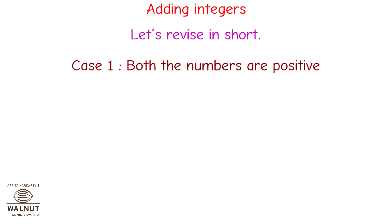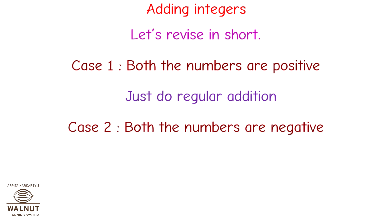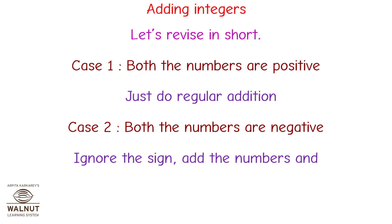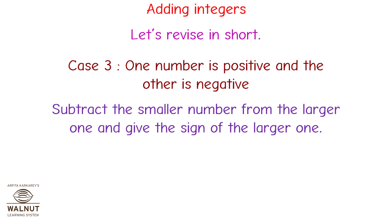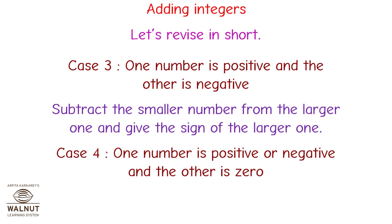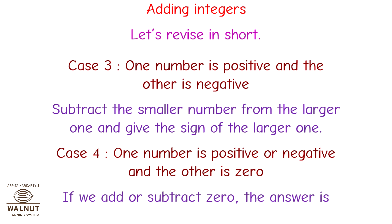Let's revise in short. Case 1: both the numbers are positive — just do regular addition. Case 2: both the numbers are negative — ignore the sign, add the numbers, and give the sum a negative sign. Case 3: one number is positive and the other is negative — subtract the smaller number from the larger one and give the sign of the larger one. Case 4: one number is positive or negative and the other is 0 — if we add or subtract 0, the answer is the number itself.